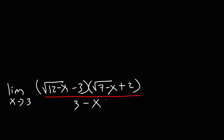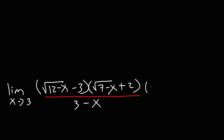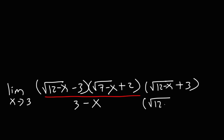We can multiply the numerator and the denominator by the conjugate of the radical that was in the beginning — the numerator radical. So we're going to multiply the top by the square root of 12 minus x, plus 3 instead of minus 3. And whatever you do to the top, you must also do to the bottom.